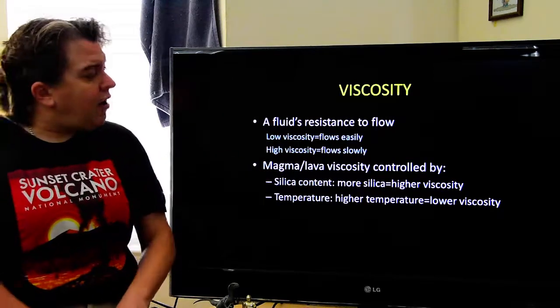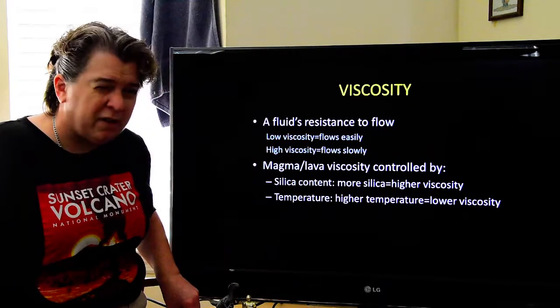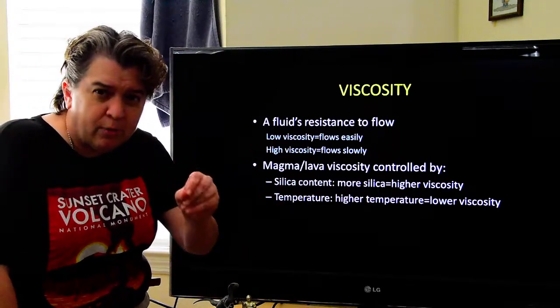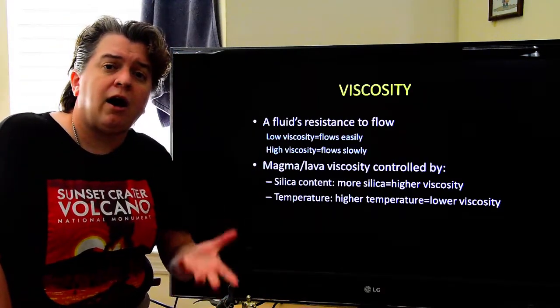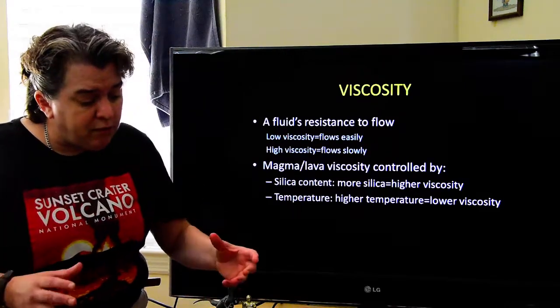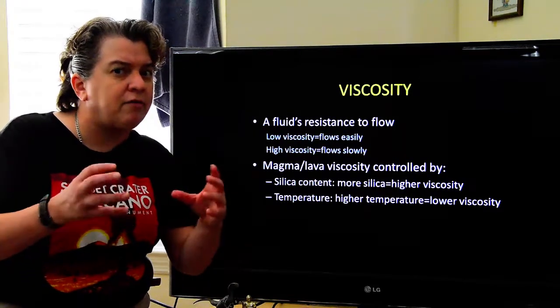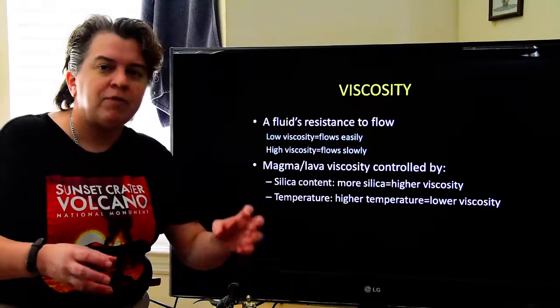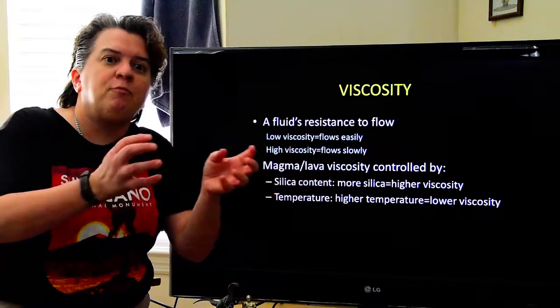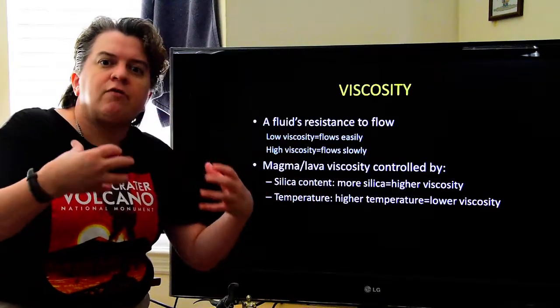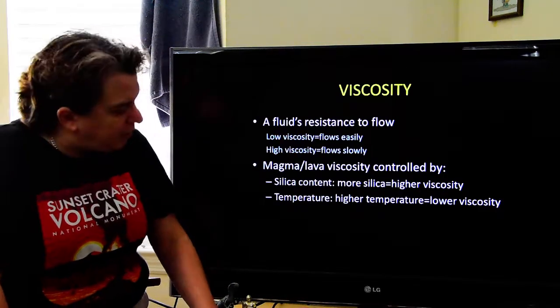And the viscosity of a lava is controlled by two characteristics. Well, for the most part, these are the two really important characteristics. One is silica content. The more silica, the higher the viscosity. And the reason for this, remember those little silicate tetrahedra that I talked about? They're the building blocks of every silicate mineral. The more of those that you have, they like to stick to each other. So if you have more of them, you have more of them trying to stick to each other, so your lava gets a whole lot stickier and gooier. So you get higher viscosity.